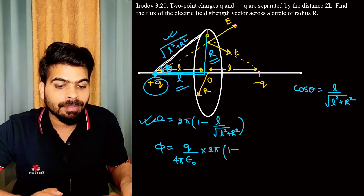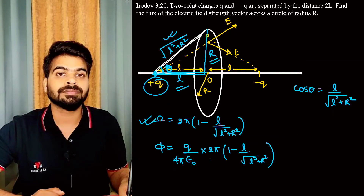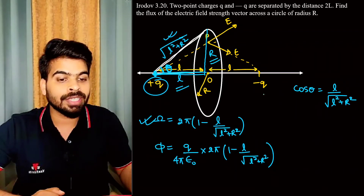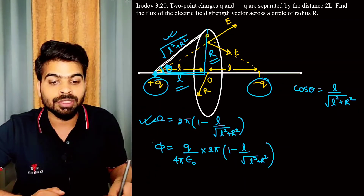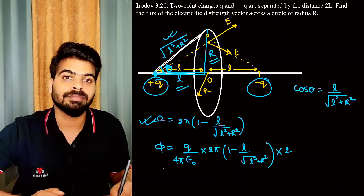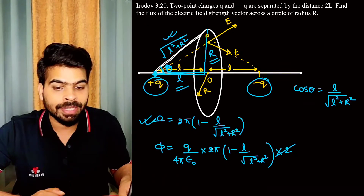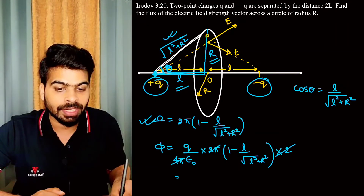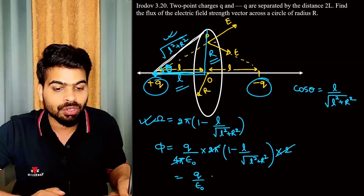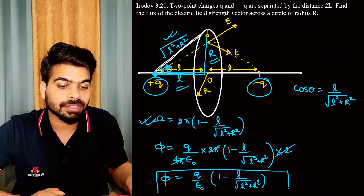The solid angle is 2π times (1 minus l over root over (l squared plus r squared)). The two pi's and four pi's cancel out, giving us the flux value as Q over epsilon-not times (1 minus L over root over (L squared plus R squared)).